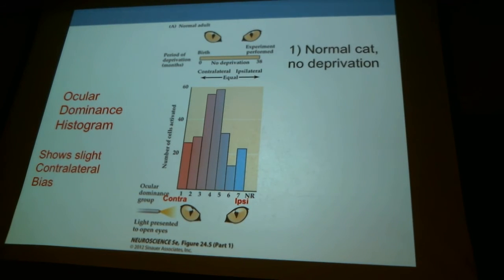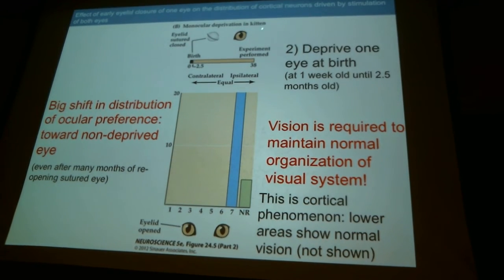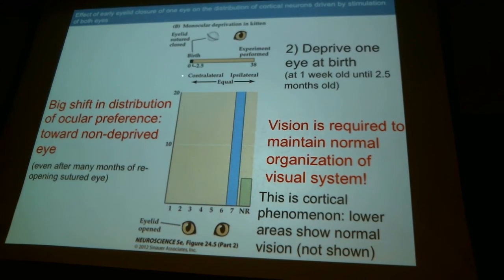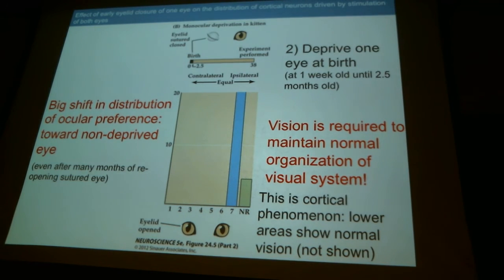Now we perform the manipulation as Hubel and Wiesel did. We deprive one eye at birth — cats open their eyes around a week or so, and at about that time you suture one eye shut and leave the other open for about two and a half months. Then you perform experiments in the adult animal. You get a huge shift in the distribution of ocular preference toward the non-deprived eye. Here the contralateral eye was sutured shut. Basically all of those contralateral-preferring neurons are gone — if you shine light in the contralateral eye, the cortex doesn't see it. All of the neurons are responsive only to the ipsilateral eye, which was left open. This shows you need that activity for normal development.